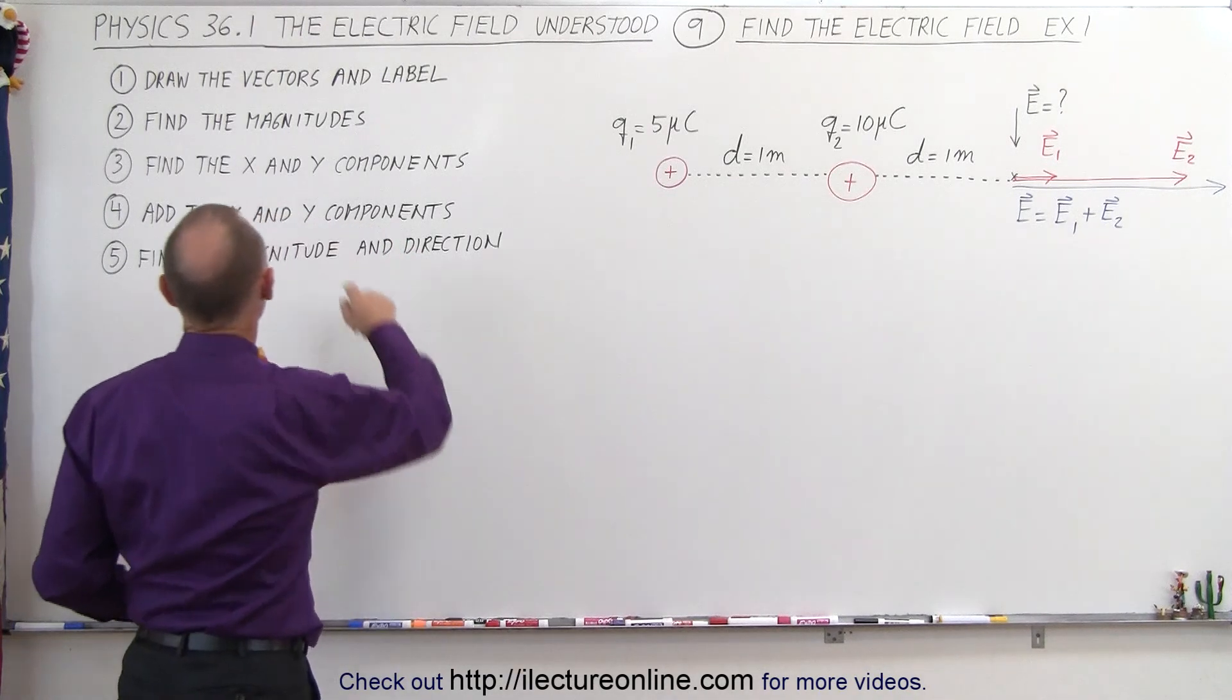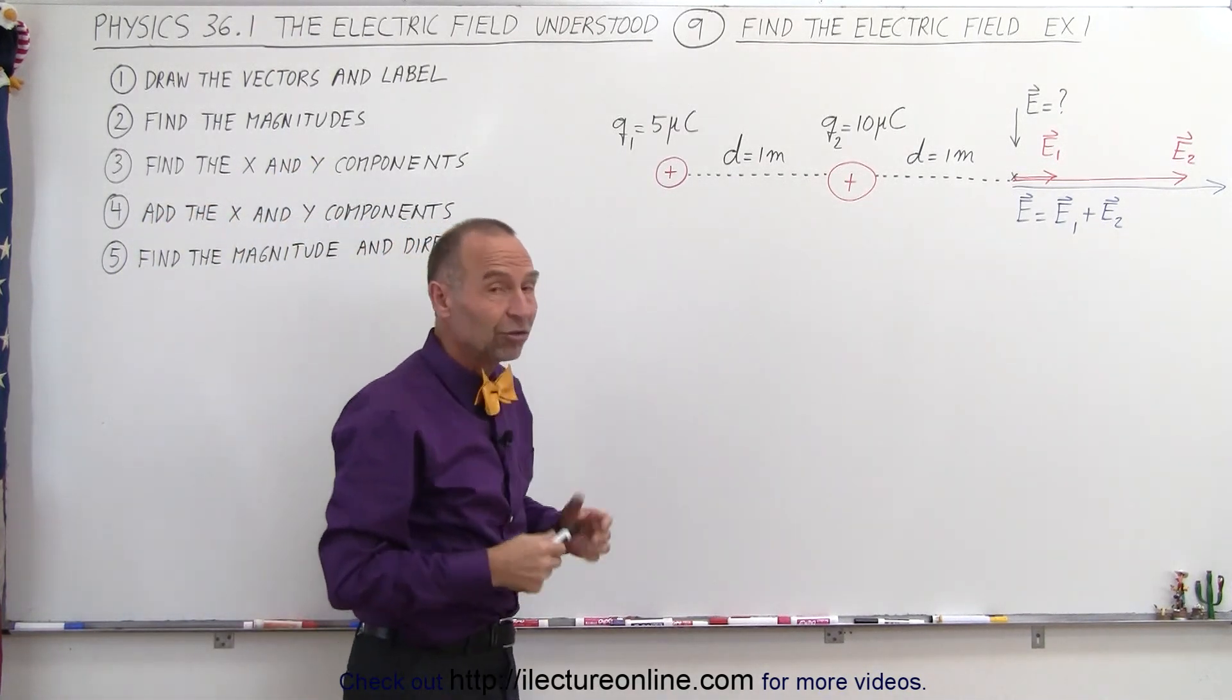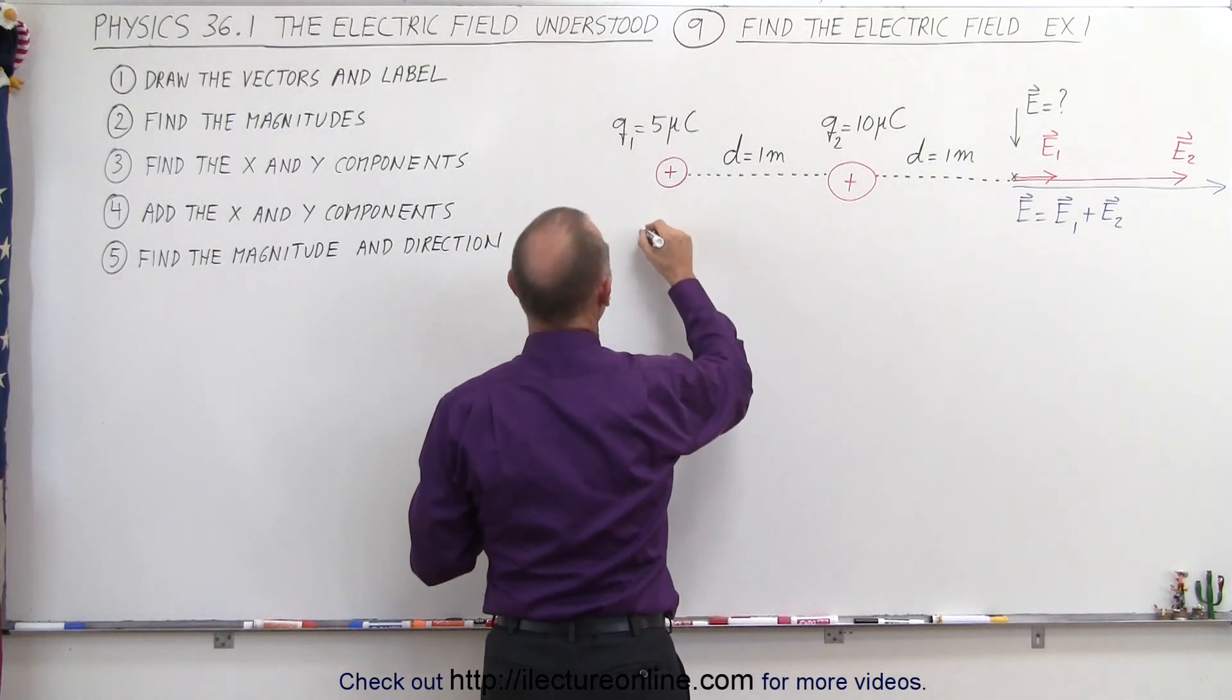Now next they tell us find the magnitudes of these individual vectors E one and E two. So let's go ahead and do that. E one...